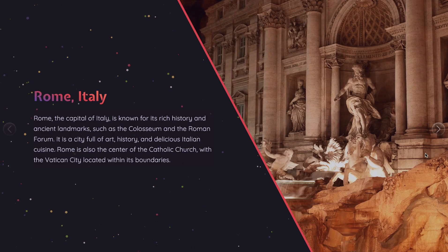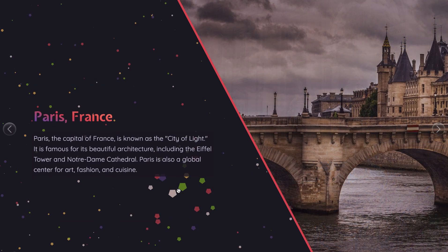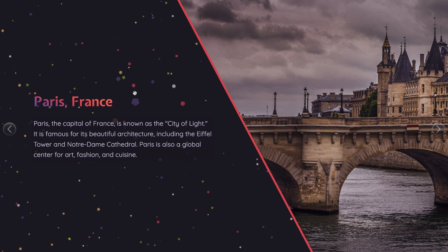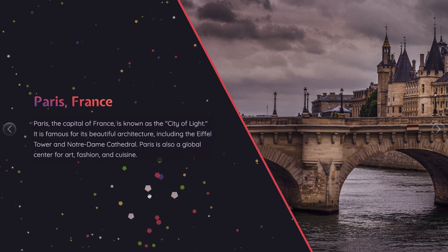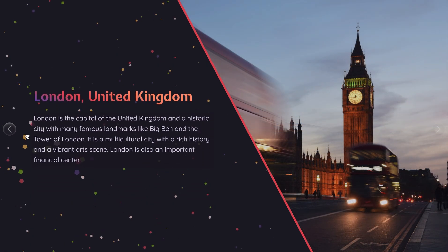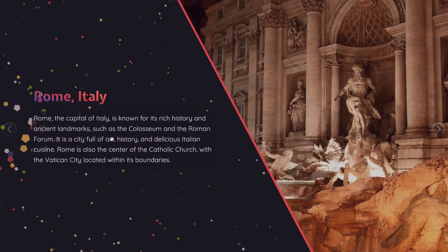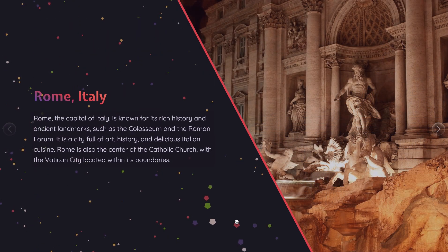Hi everyone, welcome back to my channel. In this tutorial, I'll show you how to synchronize text and image sliders using HTML, CSS, and Swiper.js, and also add the animated background to the text slider using Particles.js. Let's get started.